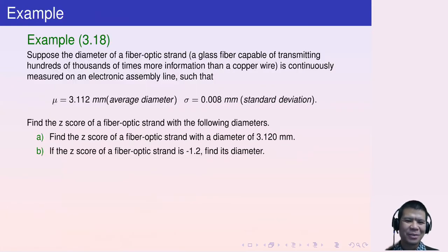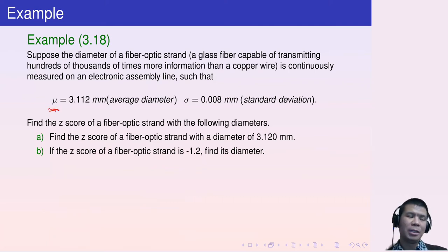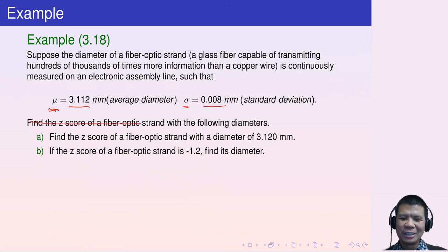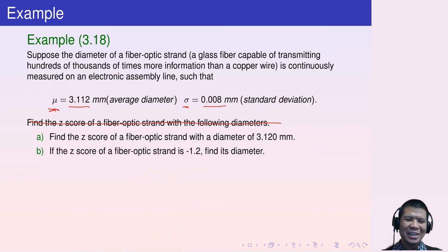Let's consider another example. Suppose the diameter of a fiber optic strand — a glass fiber cable that transmits hundreds of thousands of times more information than a copper wire — is continuously measured on an electronic assembly line. The population mean mu is 3.112 millimeters and sigma is 0.008 millimeters. We want to find the z-score of a fiber strand with a diameter of 3.120 millimeters.